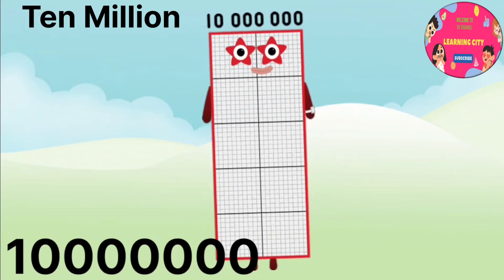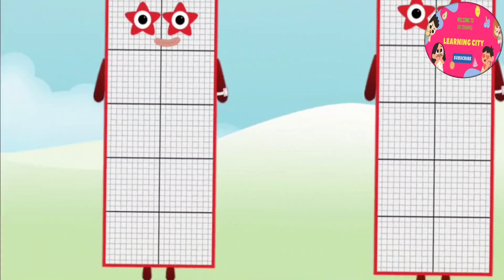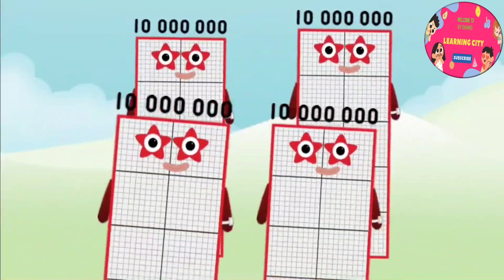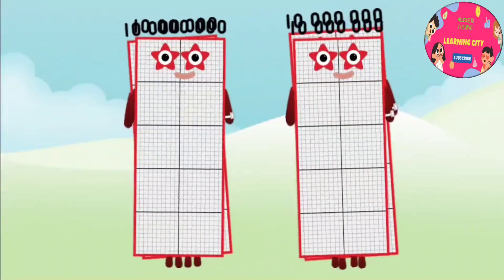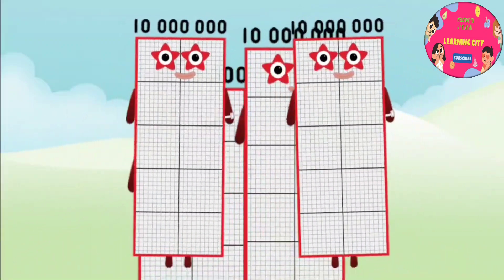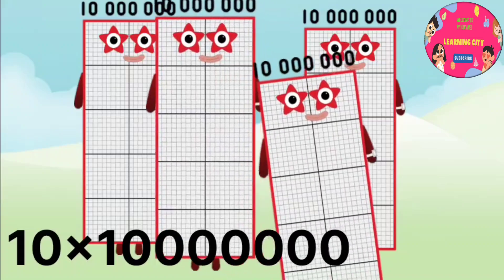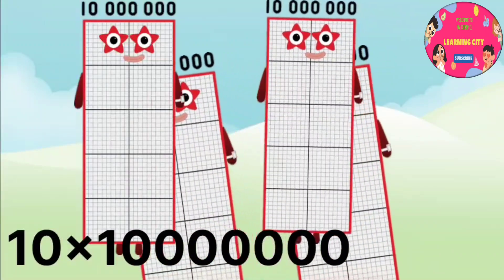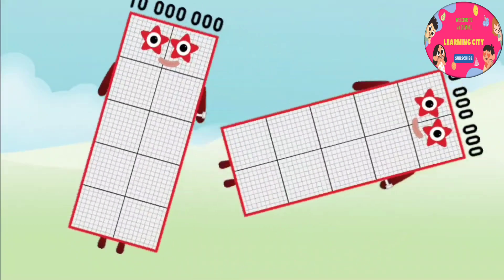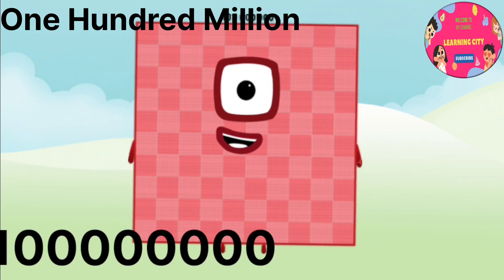Ten million! Yeah. Now, 10 times ten million is — we can say 10 multiplied by ten million equals — can you guess? Yes, you can do it. One hundred million! Yeah.